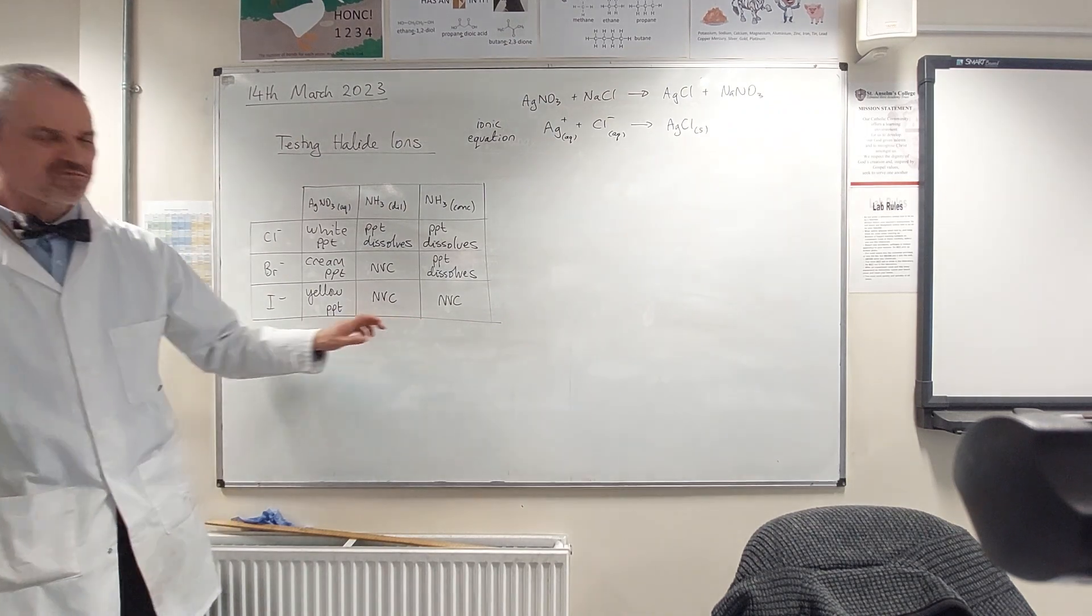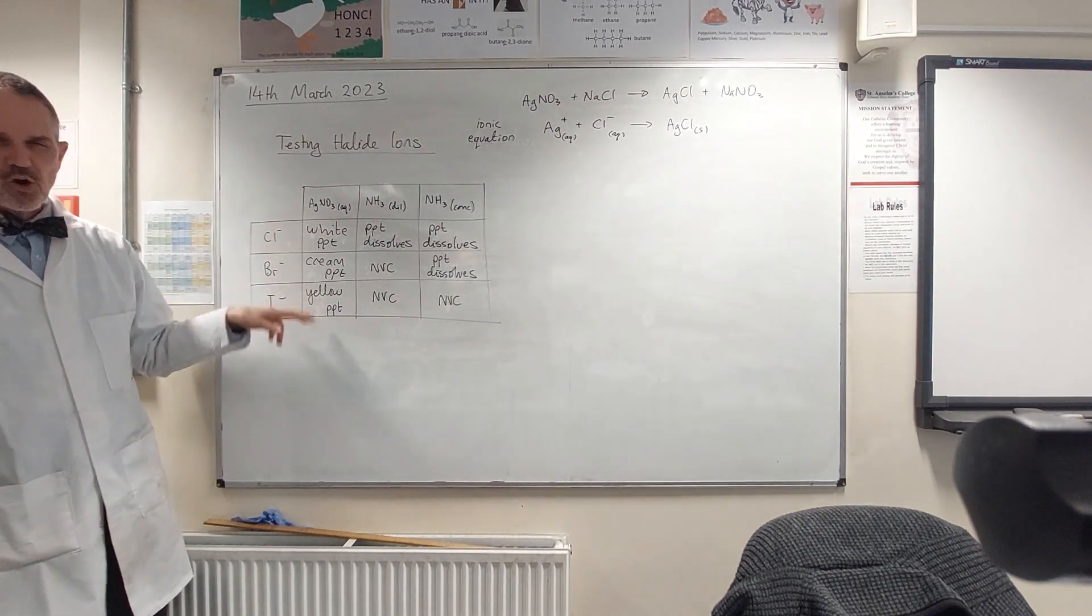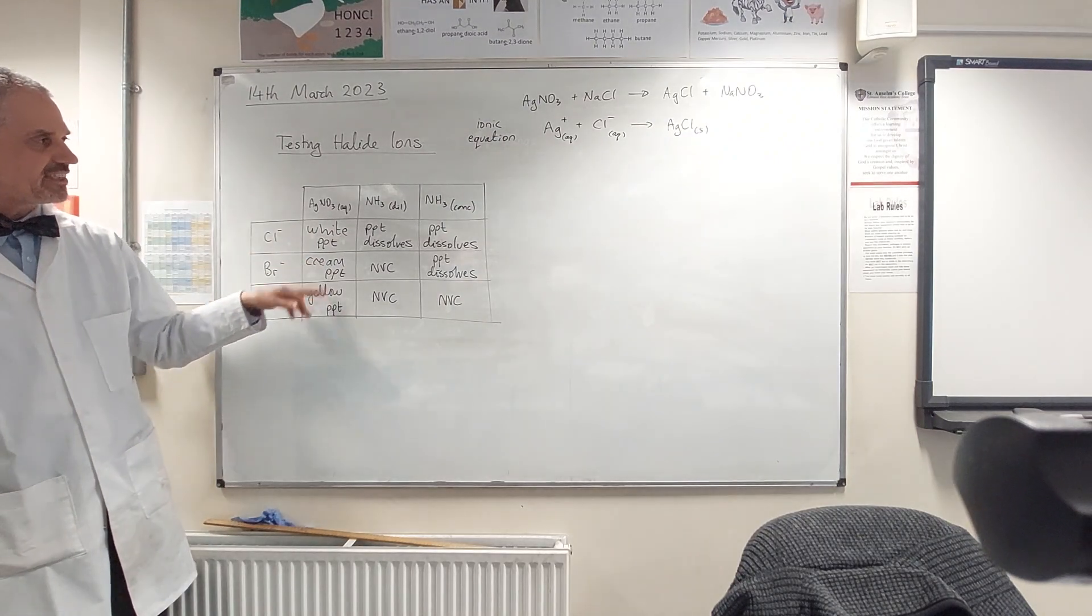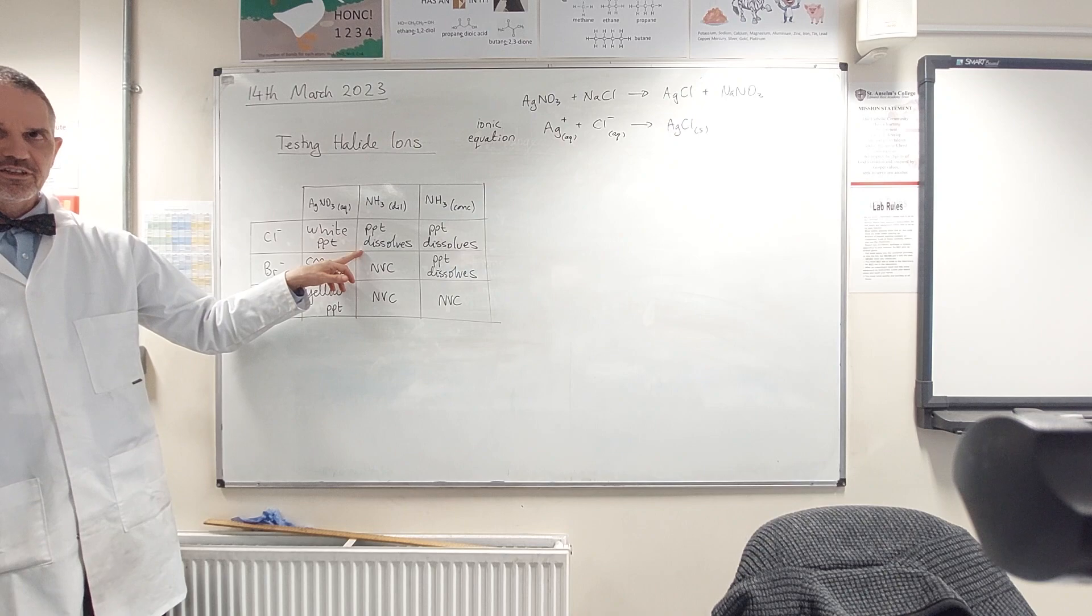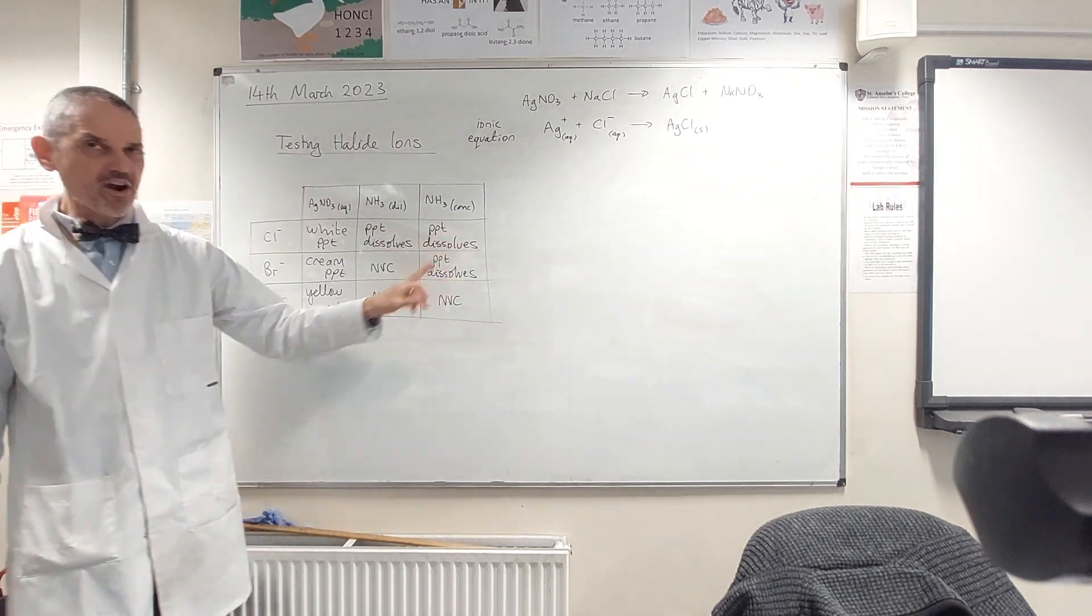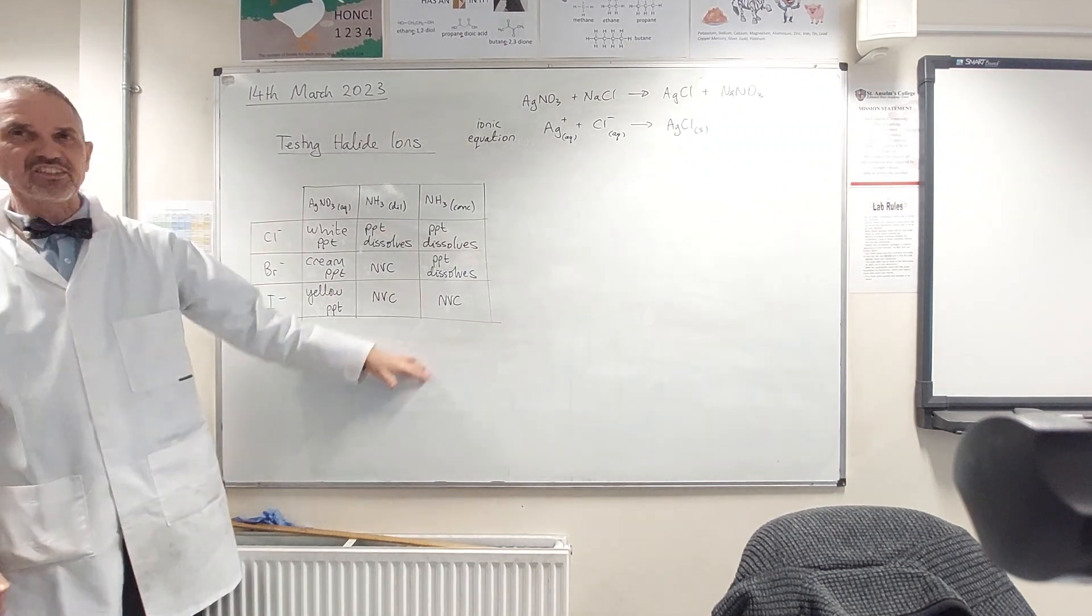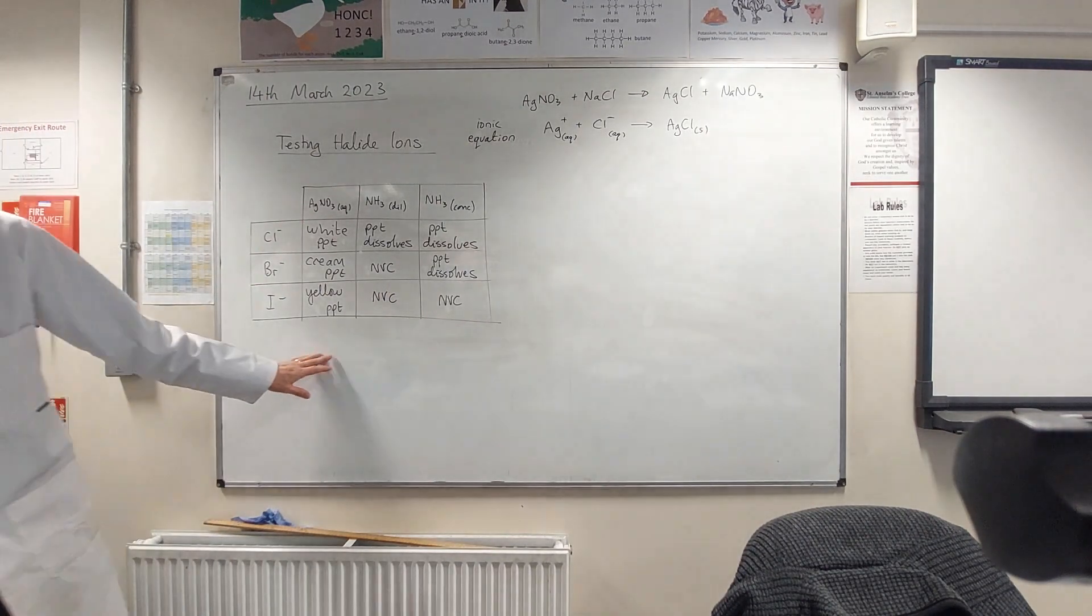So hopefully we end up with something like this where, again, if you're not quite sure what the colour of the precipitate is, we test it with dilute ammonia, only chloride will dissolve. We can then test it with conch ammonia, only chloride and bromide will dissolve. That gives us enough variety to be sure about what we've got.